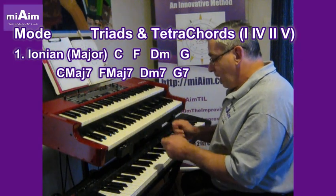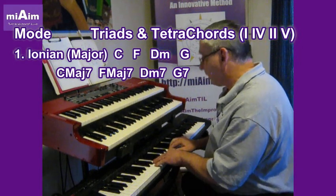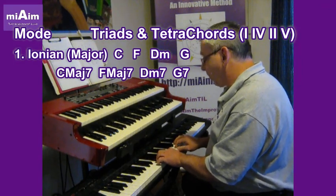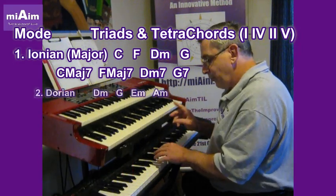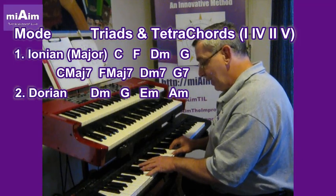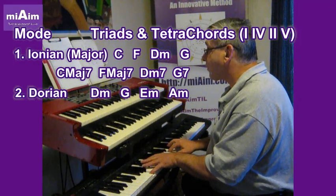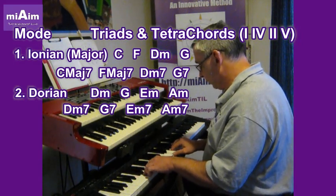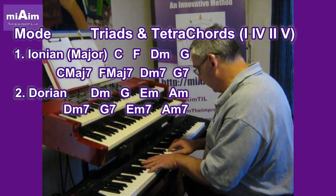In the Dorian, we're going to say the second note of the scale — in this case D — is going to be known as 1. So it'll go tone, semitone, tone, tone, tone, tone, semitone, tone. So you can hear it shifting. The triads will be D minor, G, E minor, and A minor. The tetrachords will be D minor 7th, G7, E minor 7th, and A minor 7th.